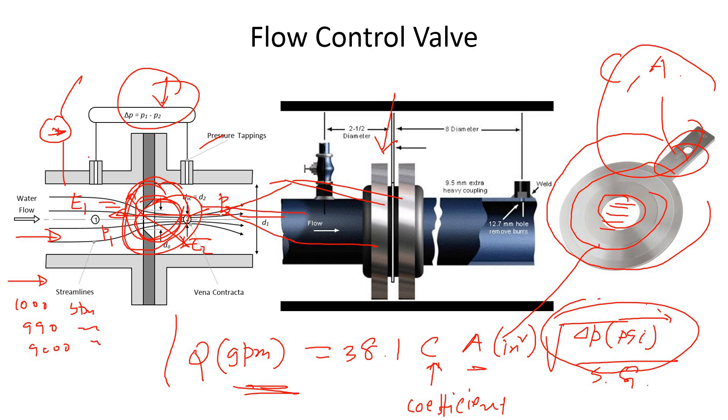So what happens is when you restrict the flow, the pressure before and after that changes - the pressure drop. The more restriction you do, the more pressure drop happens.